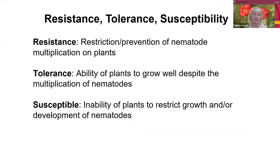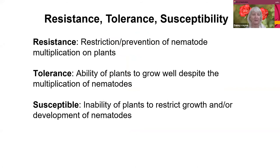Pest resistance is when you prevent the nematode from multiplying on the plants — they might be there but not be able to grow up. Tolerance is the ability of the plant to grow well but nematodes multiply and build up. Susceptible means the plant will not grow well but the nematode will build up.